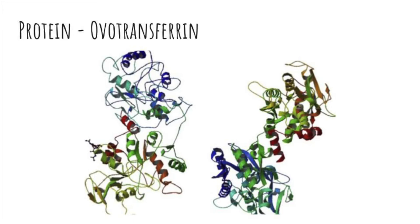When you heat an egg, the proteins gain energy and shake apart from their bonds. The amino acid strings cause the proteins to unfold. And as the temperature increases, the proteins gain enough energy to form new covalent bonds with other protein molecules. And these bonds are much stronger.